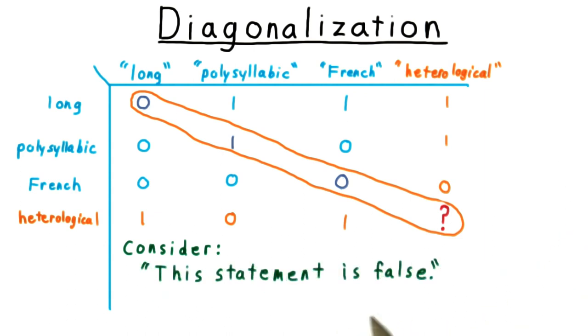Or from mathematical logic, consider the statement: this statement is false. If this statement is true, then it says that it's false. And if this statement is false, then it says so, and should be true. It turns out that falsehood, in this sense, isn't well defined mathematically.